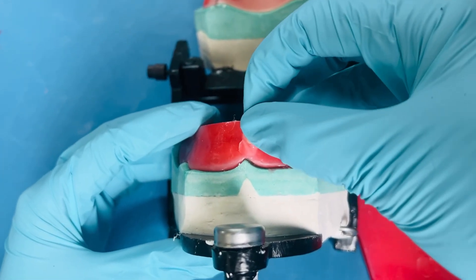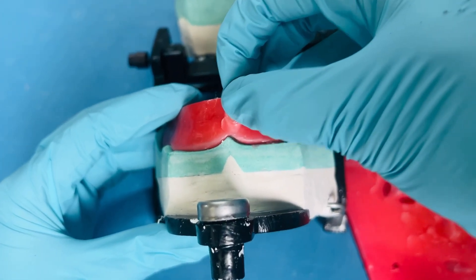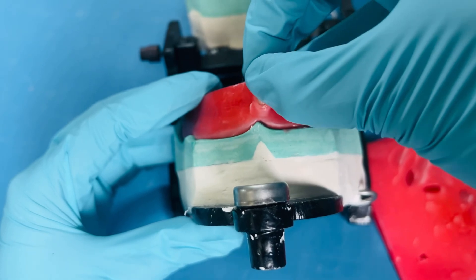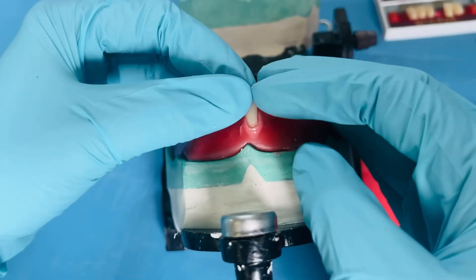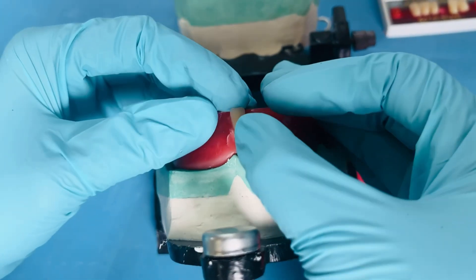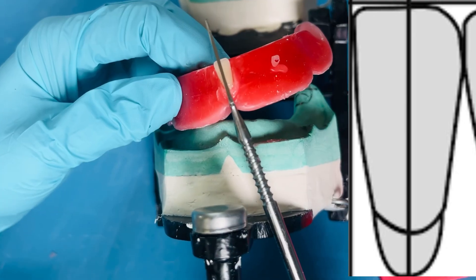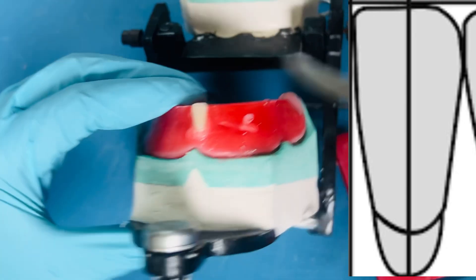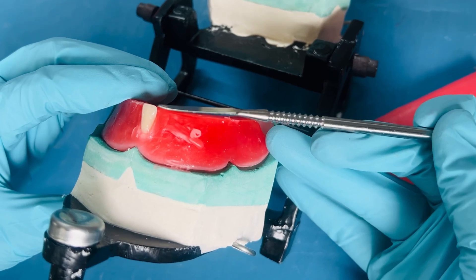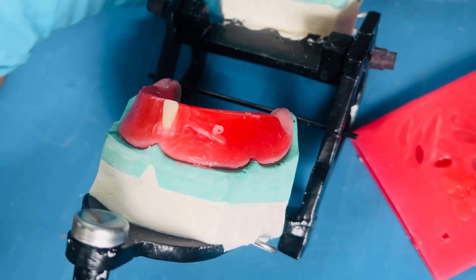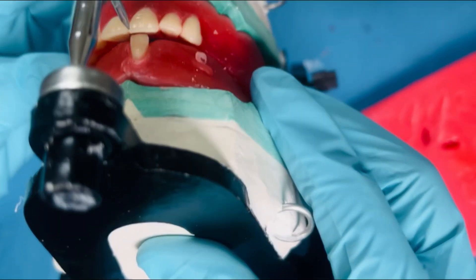Hi dears, this is a continuation of my previous video on maxillary anterior teeth arrangement. We shall begin with the mandibular central incisor. The long axis of the mandibular central incisor is kept straight when viewed from the front and side. The incisor edge of the tooth is kept 2 millimeters above the occlusal plane.